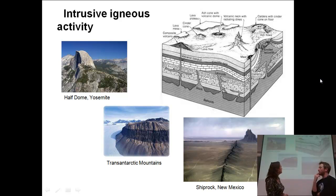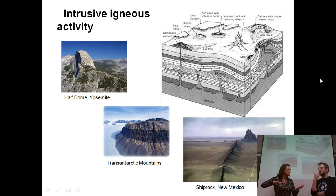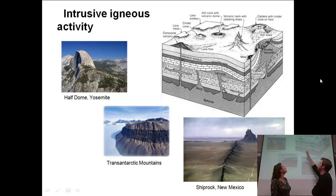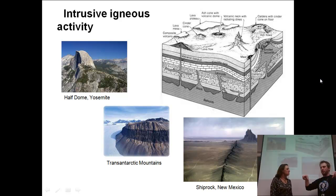The next example is the Transantarctic Mountains. In the picture there's a nice dark band right across the middle — lighter colors on top and a horizontal dark band. That would be a tabular structure because it's nice and flat, and it's not cutting across the surrounding layers, so it's concordant. That structure is called a sill. Magma coming up meets a rock it doesn't totally break through, spreads out in that tabular, horizontal form, cools, and forms a sill — like a window sill, which runs horizontal. That's what we're seeing in Antarctica.